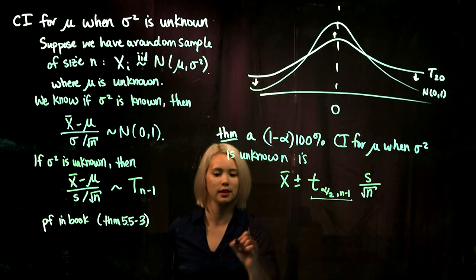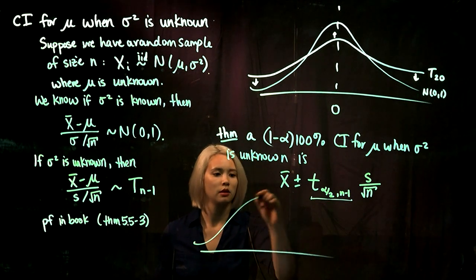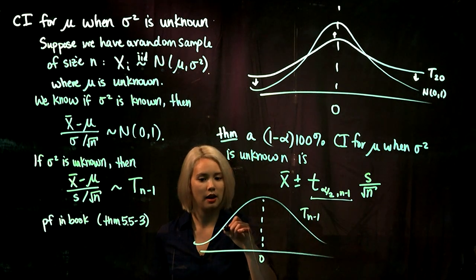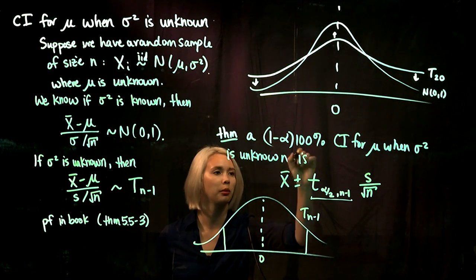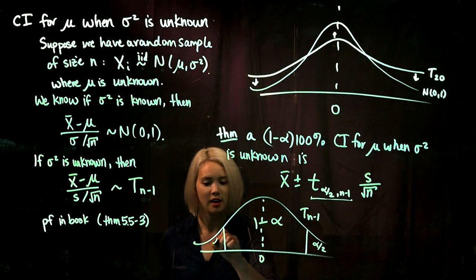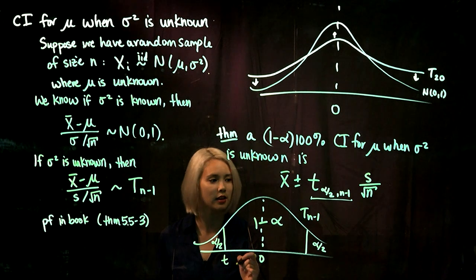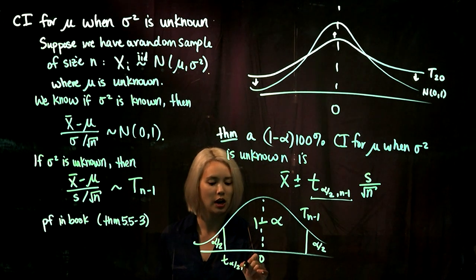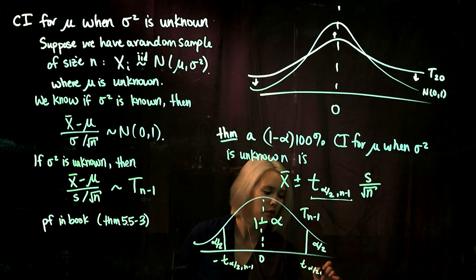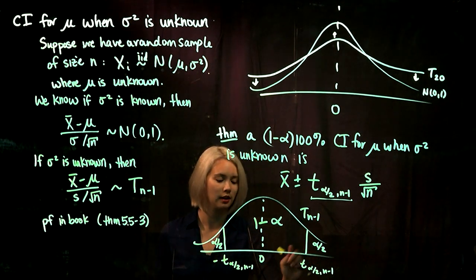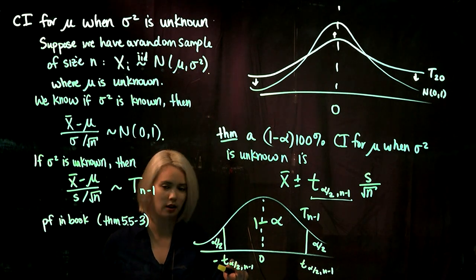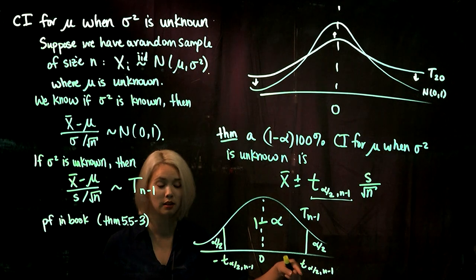To clarify what this means: here is our t-distribution with n minus 1 degrees of freedom. Since we're looking for a 1 minus alpha times 100% confidence interval, we put 1 minus alpha in the middle, alpha over 2 in the left tail, and alpha over 2 in the right tail. We call the left quantile negative t_{alpha/2, n-1} and the right quantile positive t_{alpha/2, n-1}. Because the distribution is symmetric, these quantiles are equal in magnitude but opposite in sign.